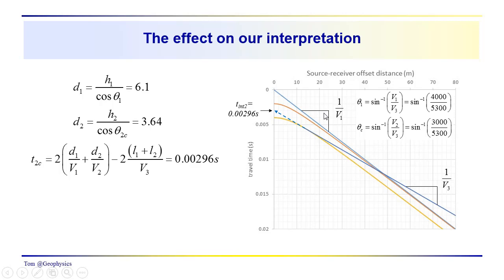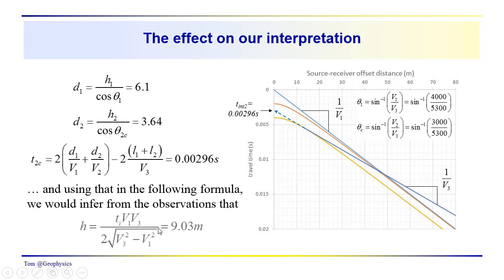Again, we're using the angles that we compute, assuming that we actually know a V1 and a V2. We get our V1, though, in our shot record, we don't really, we don't see a critical refraction here from the second layer, and then we see the critical refraction from the interface between layers 2 and 3. So we're proceeding in ignorance of the layer with the lower velocity. And using that and the following formula, we would infer from the observations that the thickness of the layer would actually be 9.03 meters, 9.03 meters thick.